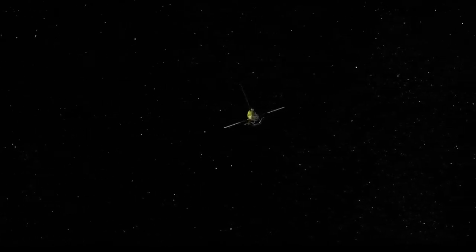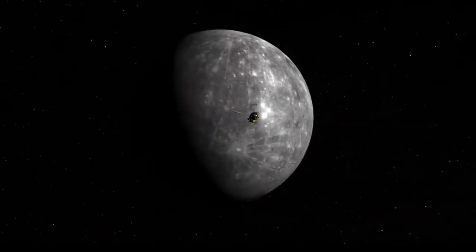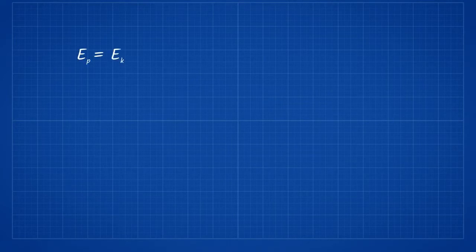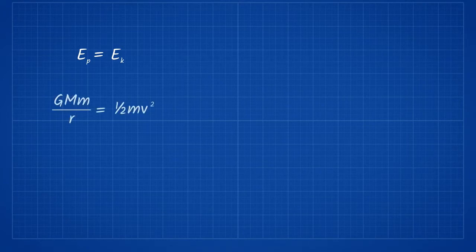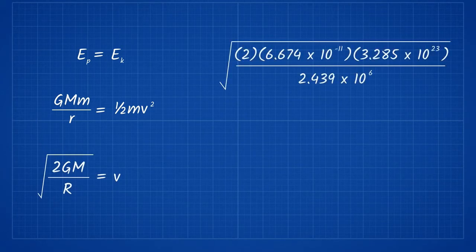Using some simple conservation of energy equations, we can figure out the speed needed to escape Mercury's gravity. On the surface of any planet, you have gravitational potential energy. If you escape that gravity completely, you have converted all of your energy from potential to kinetic energy. We can rearrange this formula to get V alone. Plugging in Mercury's mass and radius, we find that we need to generate a velocity of 4.2 kilometers per second, or Mach 12.1.